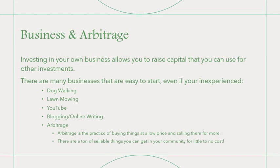One often overlooked option is investing in your own business. Even with as little as $100 you can invest in your own business. There are a lot of businesses you can engage in today that don't have a lot of startup costs and can make you enough money to very easily double or triple a $100 investment. If you're very young and just starting out, you could do things like dog walking, mowing lawns, starting a YouTube channel, buying a decent microphone and camera and talking about something you know, or spending time blogging and writing online. These are all realistic options for very low investment that can earn you additional cash so that you have more to invest in other vehicles.